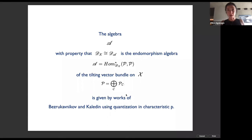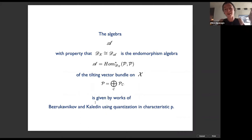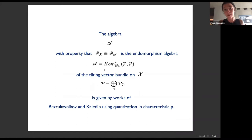The category of B-type branes upstairs also has an algebraic description. The works of Cox and Bondal — which worked for toric varieties — were generalized to arbitrary holomorphic symplectic spaces in works of Bezrukavnikov and Kaledin using quantization in characteristic p. The algebra A upstairs — what Bezrukavnikov and Kaledin showed — is that big X has a tilting vector bundle, so the derived category of coherent sheaves is the derived category of modules of its endomorphism algebra.